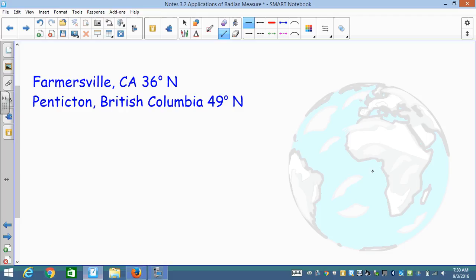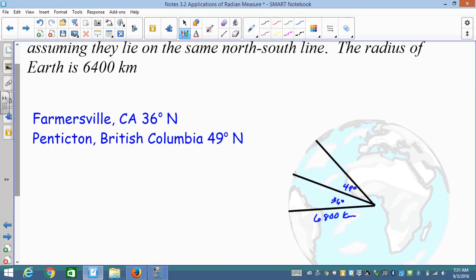Okay, so the question is, how did you guys do? So we've got our equator. Farmersville, California is about 36 degrees north. And Princeton, British Columbia is about 49 degrees north. So we have 36 degrees north, we have 49 degrees north, and we have our radius of 6,400 kilometers.